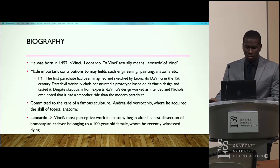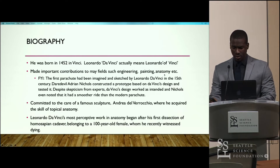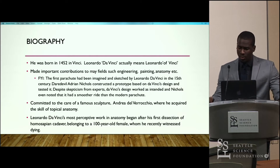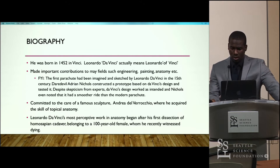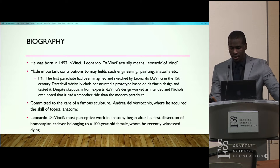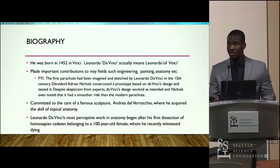Leonardo da Vinci was actually born in a place known as Vinci, which is located on Mount Albano in the valley of the river Arno, dividing Florence from Pisa. Thus, his name Leonardo da Vinci actually means Leonardo of Vinci — he didn't actually have a surname.